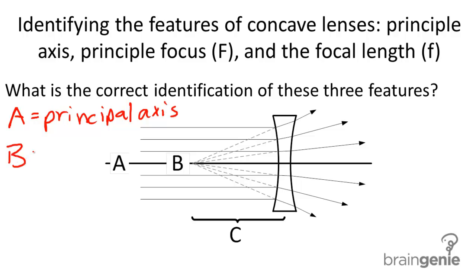B is what we call the principal focus or the virtual focus. That's the point where rays of light diverge away from.